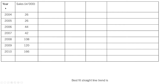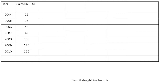I have drawn the table here with the data given in the question. For various years, the sales in 1000 rupees: for 2004 it is 26, then 2005 also 26, 2006 is 44, 2007 is 42, 2008 is 108, 2009 is 120, and 2010 is 166. This is the sales data given for various years. We have to find the best fit straight line trend for this data.